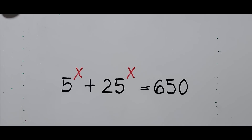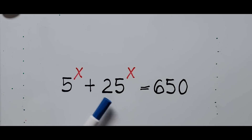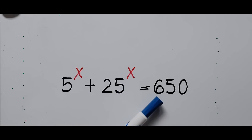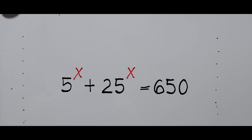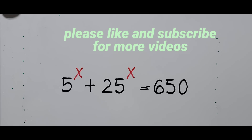Hello everyone! Welcome to Cassiano Easy Math. This video is about solving another exponential equation: 5 to the x power plus 25 raised to the power of x equals 650. We are solving for the value of x. For those new to my channel, please like and subscribe for more videos.